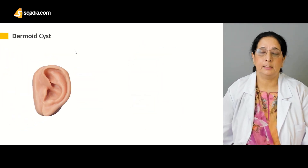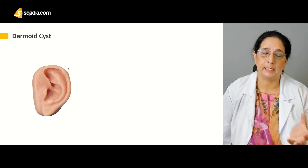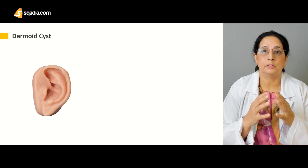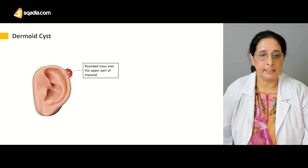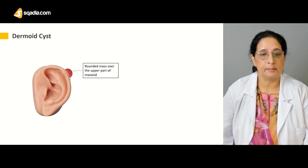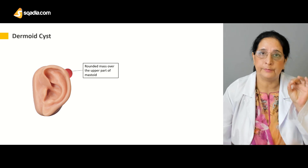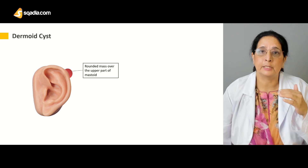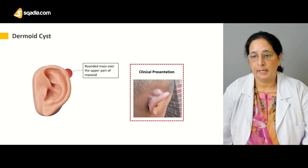Next is the dermoid cyst. Dermoid cysts have a very important characteristic — they develop from the germ cell. In dermoid cysts, we usually find hair or nails because of this germ cell origin. The dermoid cyst appears as a rounded mass over the upper part of the mastoid, which is the bone present on the back side of the ear.